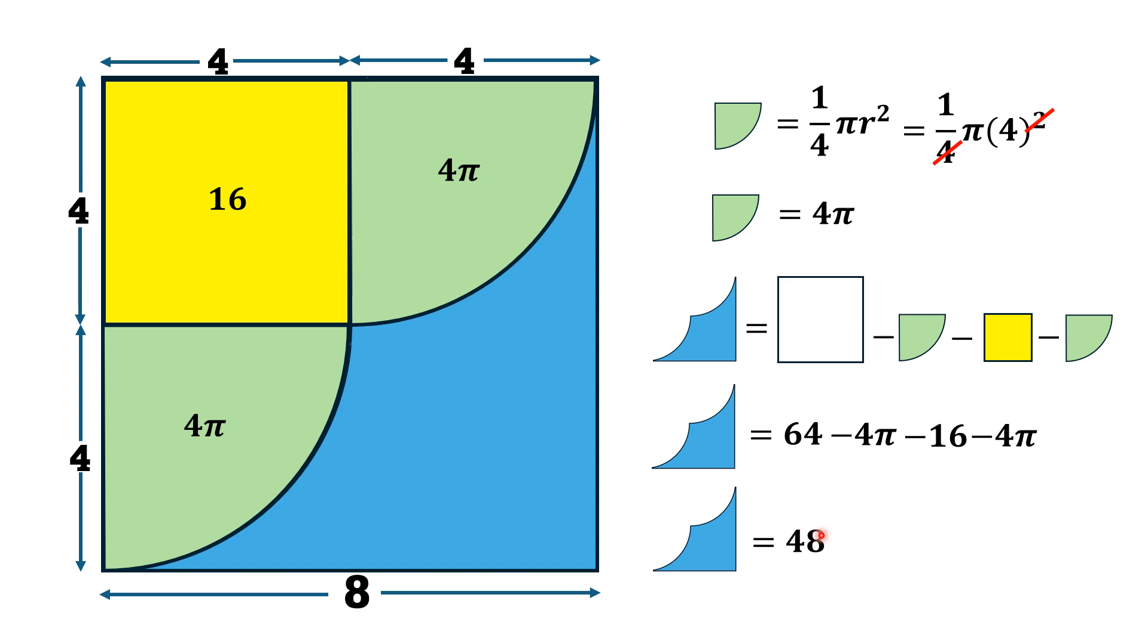It will be equal to 64 minus 16 is 48, and minus 4π minus 4π that is 48 - 8π, approximately equal to 22.8673 square units which is the area of this blue shaded region.